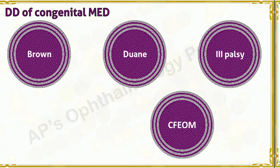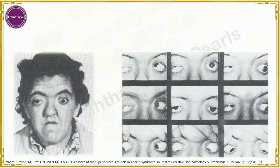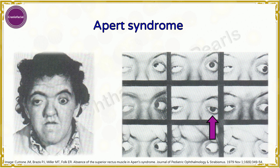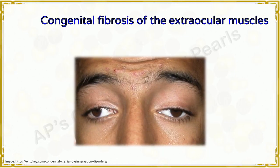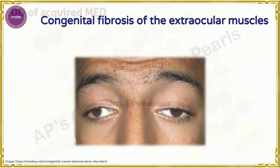Craniofacial syndromes may have agenesis or attenuation of the superior rectus, but the presence of the craniofacial syndrome should be obvious. This is a patient with Apert syndrome — there is hypotropia in primary gaze, and note the absence of elevation of the left eye in abduction, which is the field of action of the superior rectus. Total agenesis of the superior rectus muscle in this patient was noted during surgery. Congenital fibrosis of the extraocular muscles affects inferior recti initially and can be confused with monocular elevation deficiency; bilateral presentation and involvement of other extraocular muscles helps in the distinction.